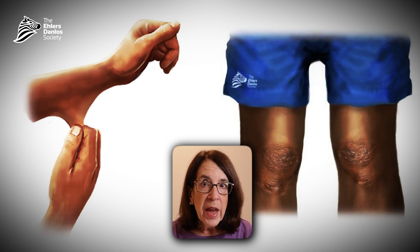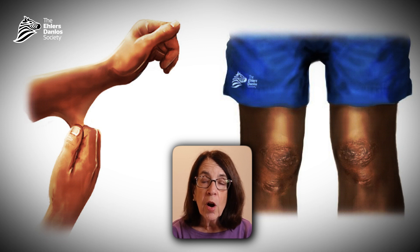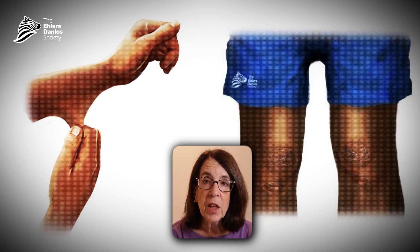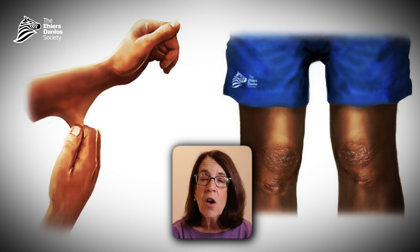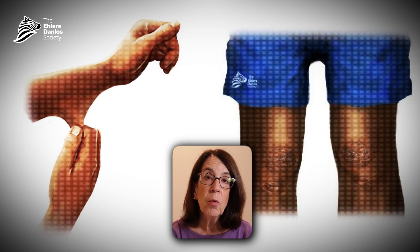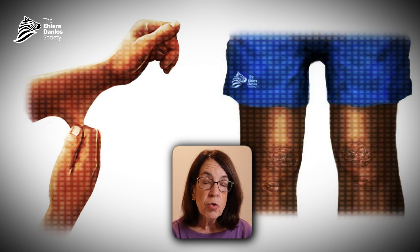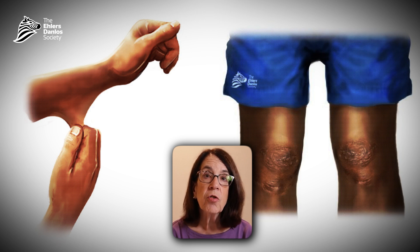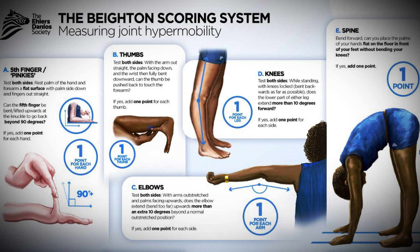There are two major criteria for the classical type of Ehlers-Danlos Syndrome. The first is the presence of skin hyperextensibility and the typical scars that we see with the fragility of the skin. Those two together form one major diagnostic feature, and then generalized joint hypermobility is the second major feature.